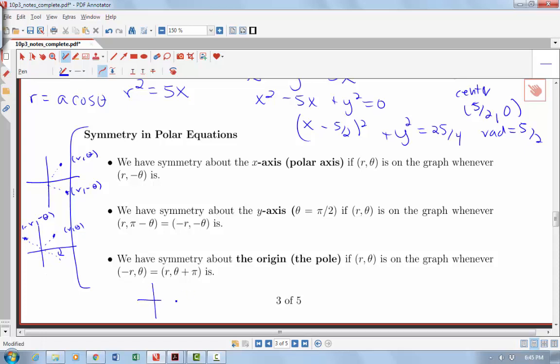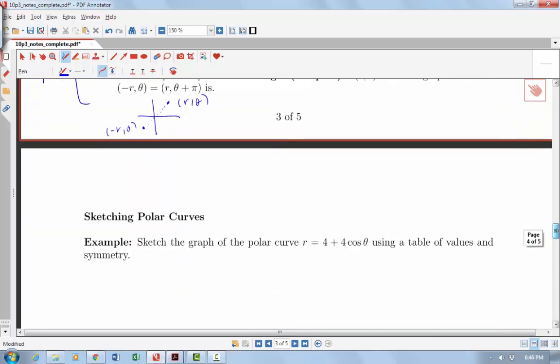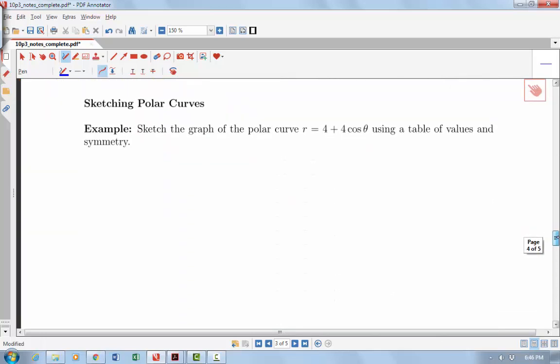We could also have symmetry about the pole, about the origin. If I have a point here, this is r theta and also a point down here of negative r comma theta. If we can identify that we have these different kinds of symmetries, then that can simplify the problem in some cases. So let's just look at one problem of actually doing a sketch of a polar curve.